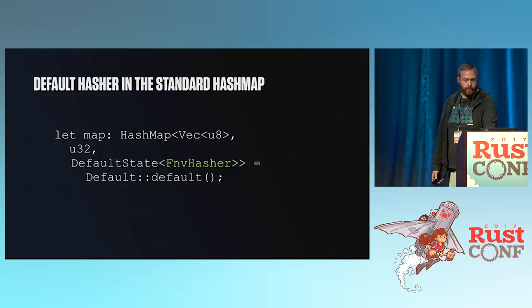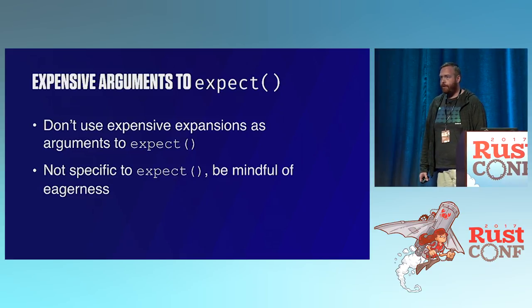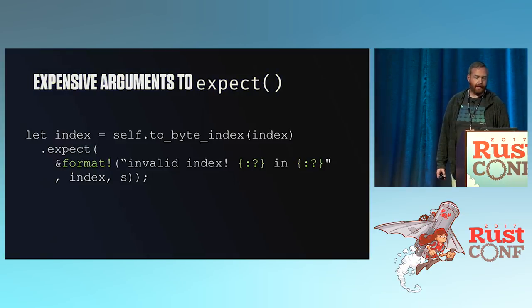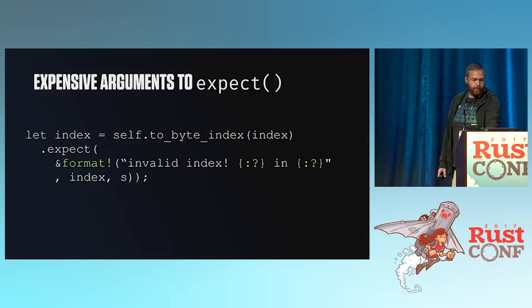It depends entirely on your use case — you can pick from one of the great alternatives. Something else that can bite you is using expensive arguments in places where you don't expect the code to be called. Expect is a good example — you can put something slow inside expect. This was pulled out of one of Eliza's libraries; it ended up in the hot path, so this format was called a bazillion times every second. Pulling it out and doing something cheaper sped up the program dramatically.